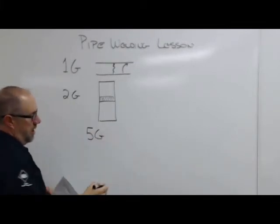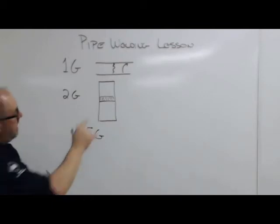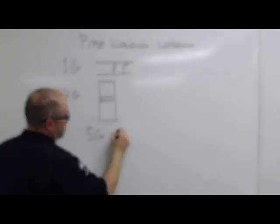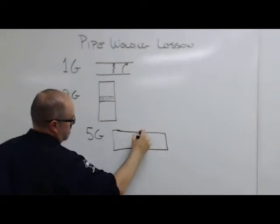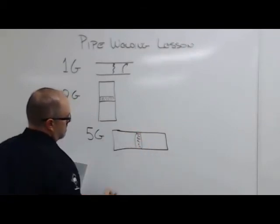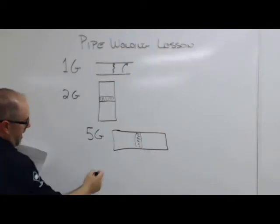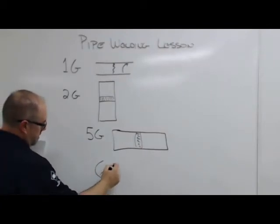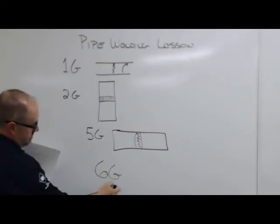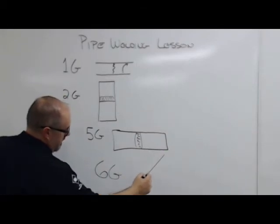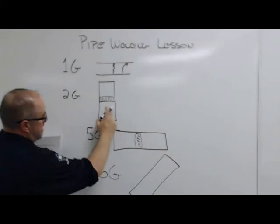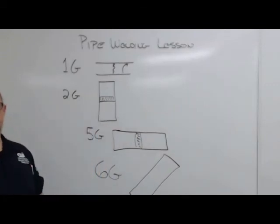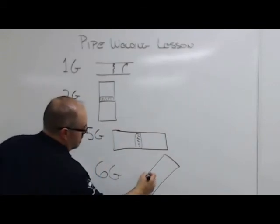And that is the pipe in this position but not rolled. That's 5G. And then the big guy is 6G. And that's that pipe at a 45 degree angle. And this, this, and this, that pipe does not move when we weld it. We've got to work around the pipe and not the other way around. So, that's 6G.